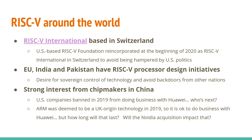There's also strong interest from chip makers in China. US companies were banned in 2019 from doing business with Huawei, so other Chinese companies are probably wondering who is going to be next in terms of these restrictions. ARM is deemed to be UK origin technology so it was okay to do business with Huawei, but how long will that last, and how will the Nvidia acquisition impact all this? That uncertainty is really driving more companies to look at RISC-V as a way to reduce uncertainty in their technology roadmaps.